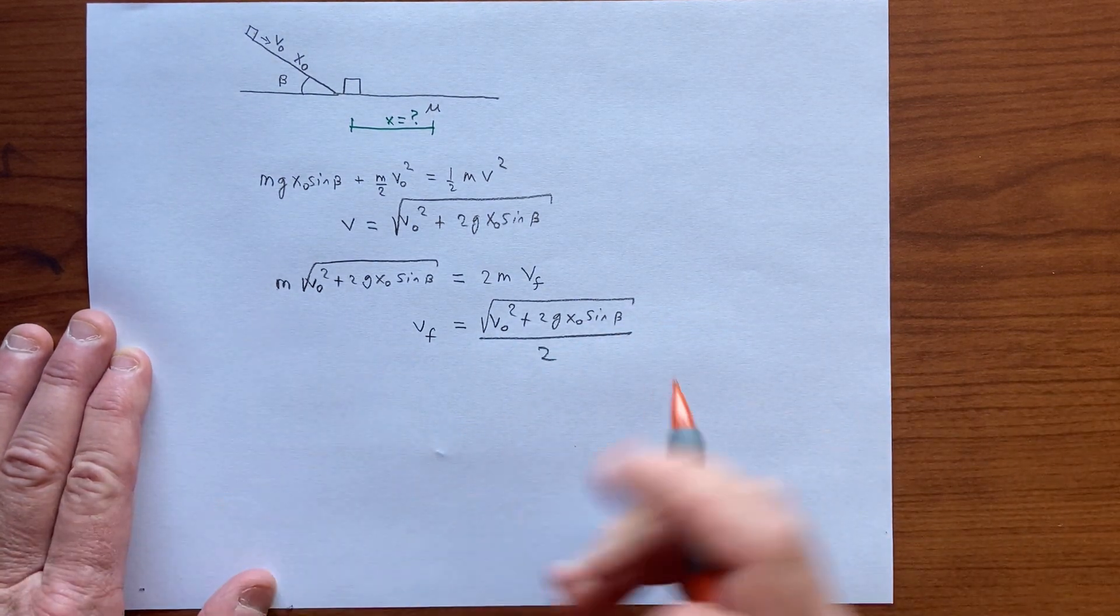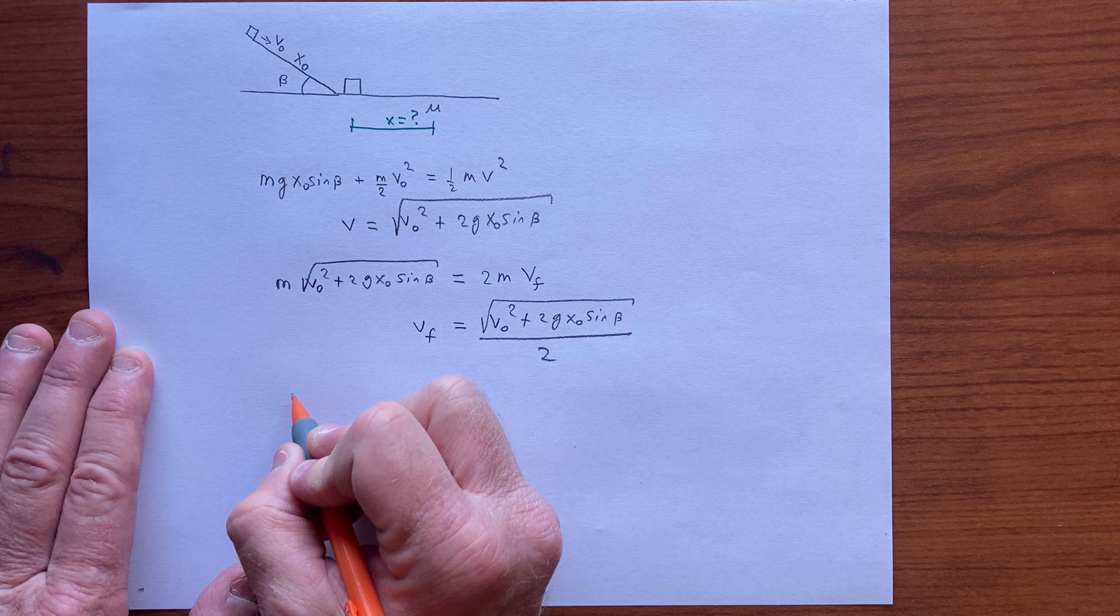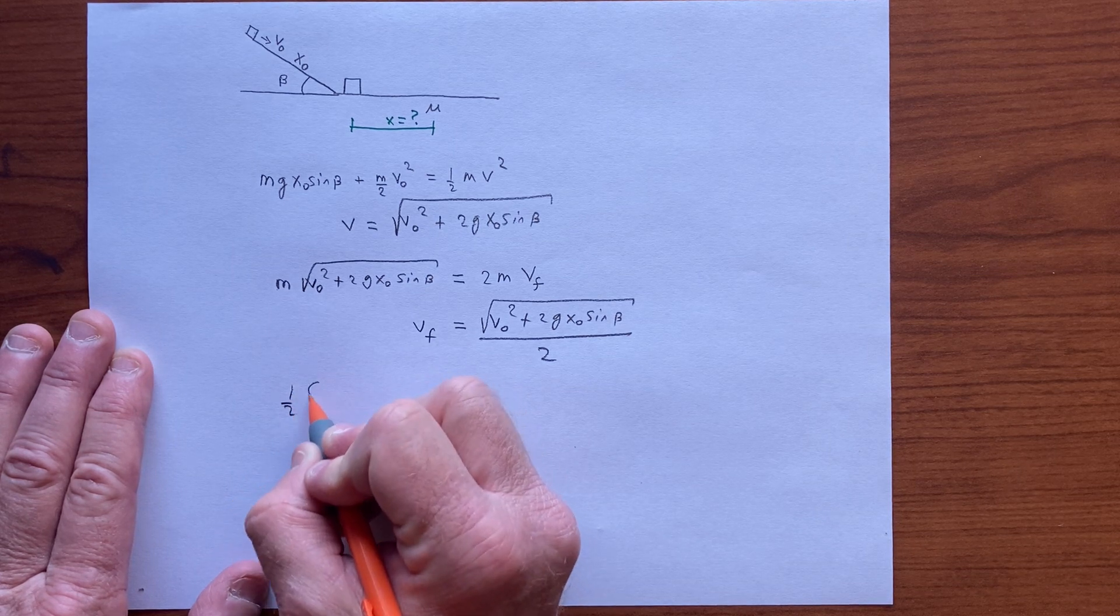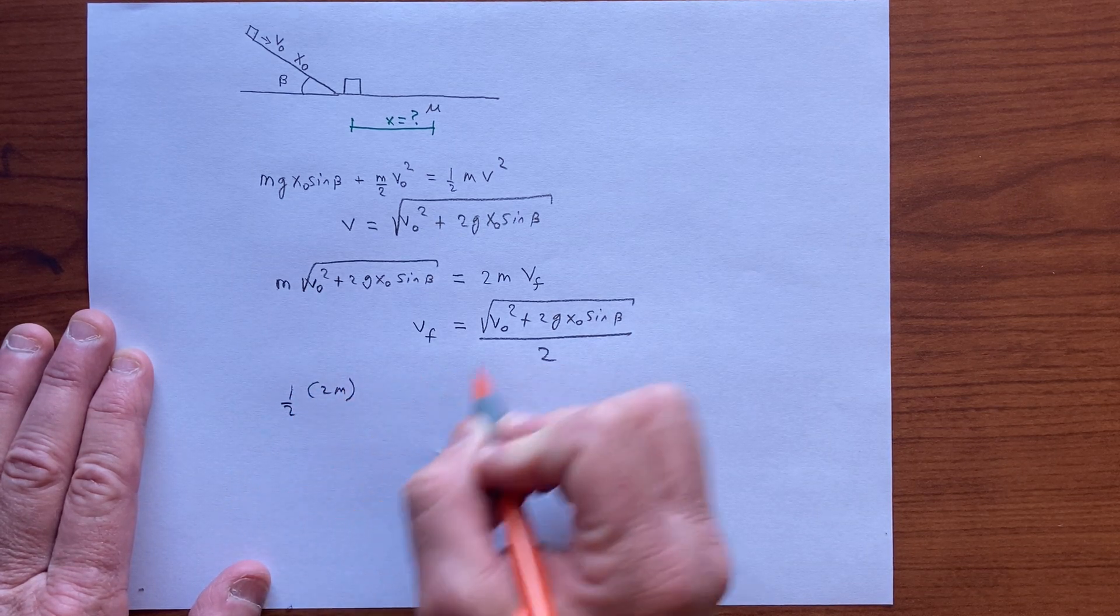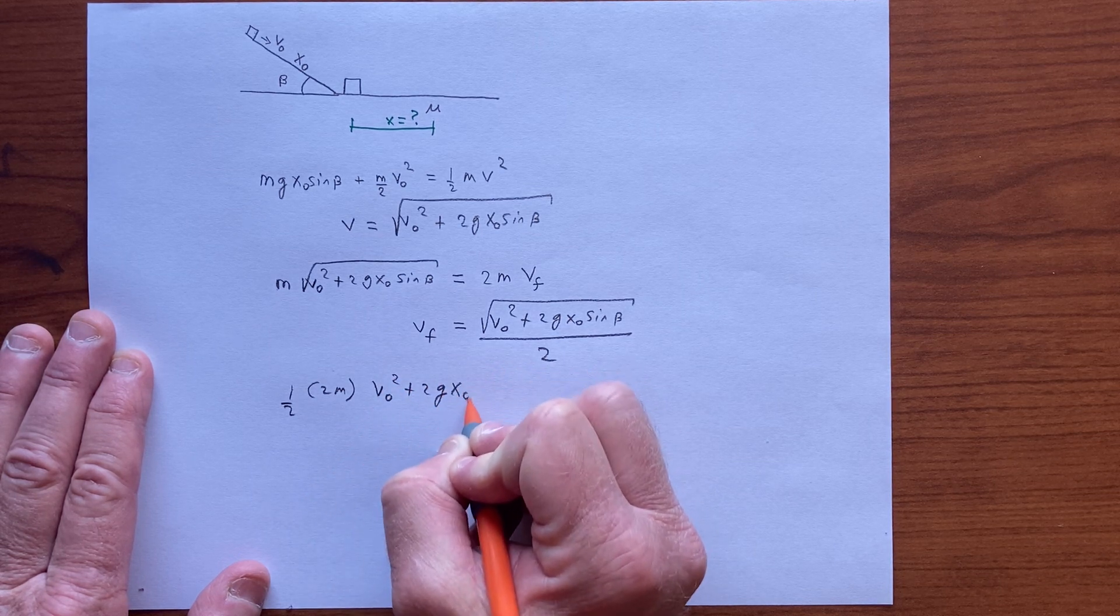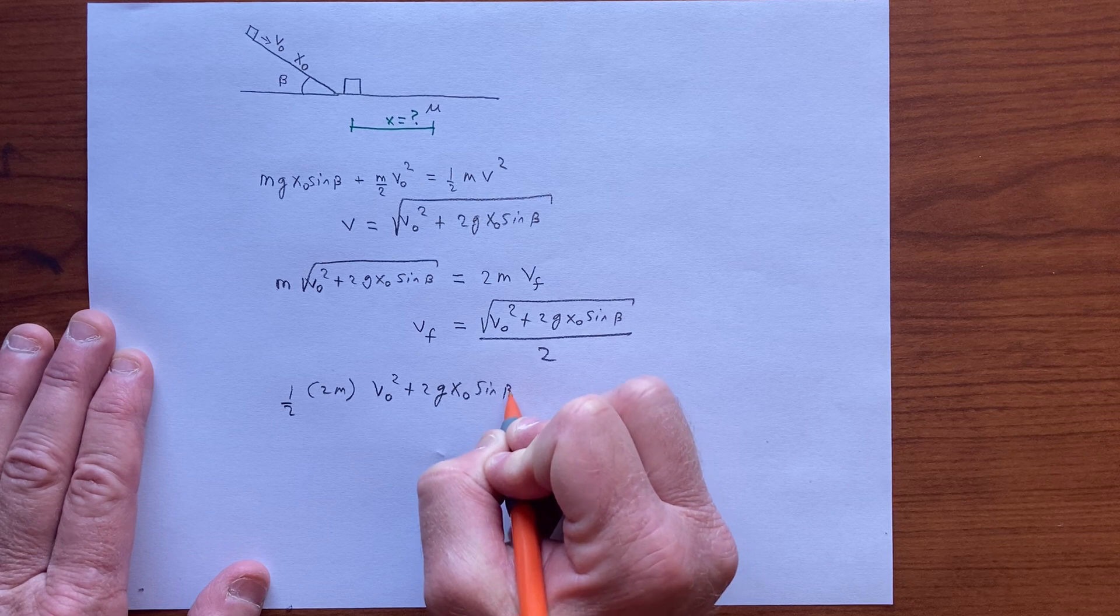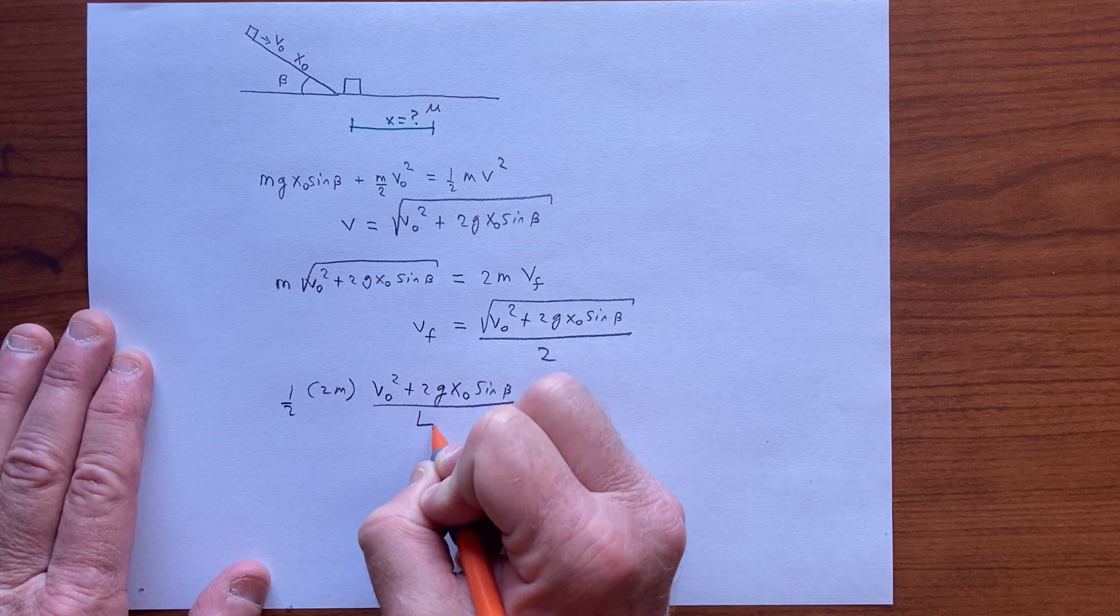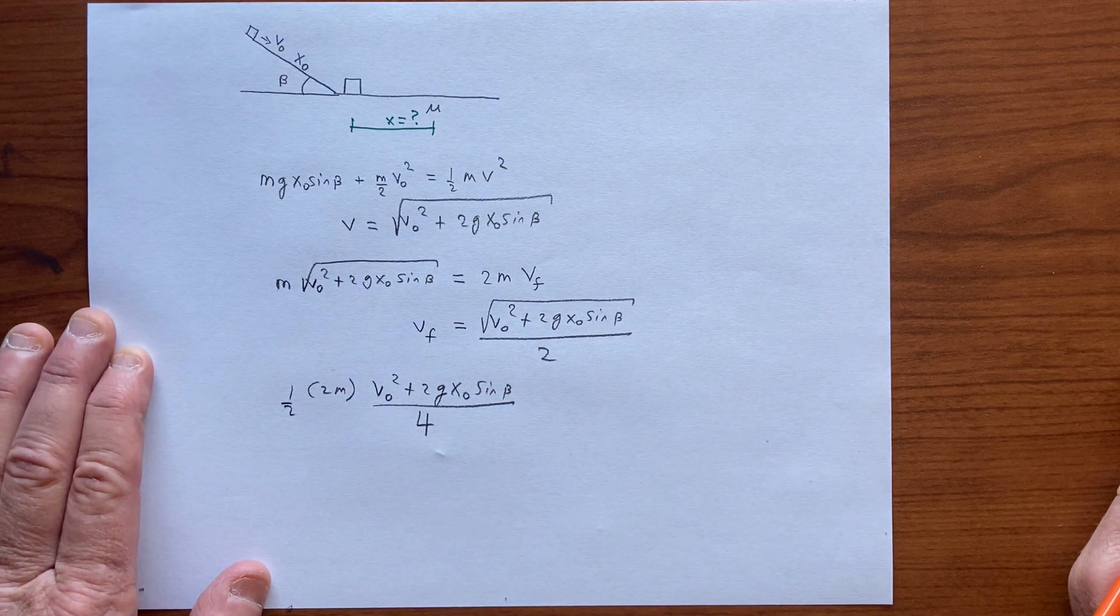And so there's some kinetic energy, which is 1 half times 2m times that speed squared, which is v-naught squared plus 2g x-naught sine of beta divided by 4. So we can simplify that.